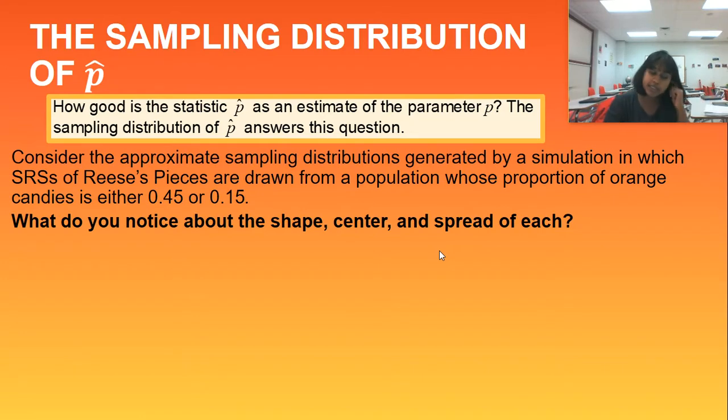So we're going to consider a Reese's Pieces simulation. We're going to do a little bit of this in class as well, but just kind of a preview or reset for some of you. We're going to do a bunch of simple random samples of Reese's Pieces from a population, and we're going to look at the proportion of orange candies at either 45% or 15%. So we launched an applet called the Rossman Chance Applet. We're going to do this in class, but you can also check on page 441 of your textbook if you want to review this.